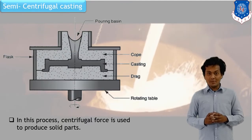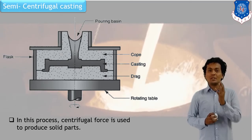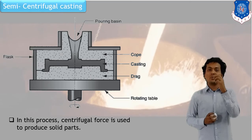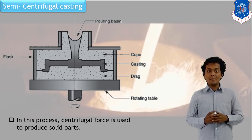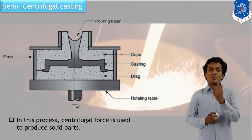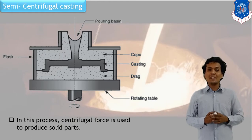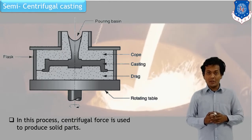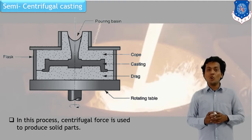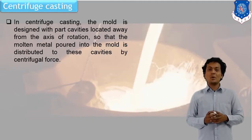In semi-centrifugal casting, the part can be made with solid geometry. Unlike true centrifugal casting where the final product is hollow, in semi-centrifugal casting we can make a solid part. With the help of rotation, we can distribute the metal into every corner so that the final product has a perfect geometry. The concept remains centrifugal, but the product is not hollow — that is why it is called semi-centrifugal.